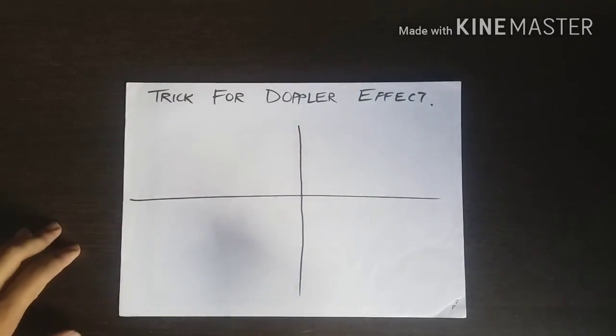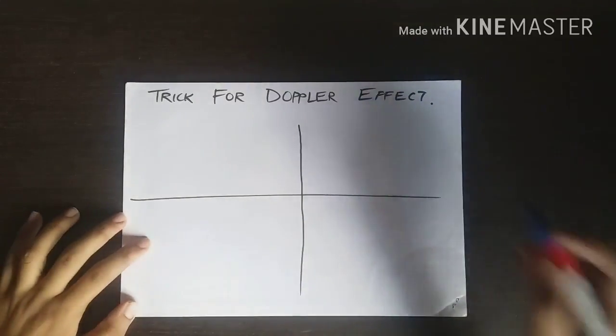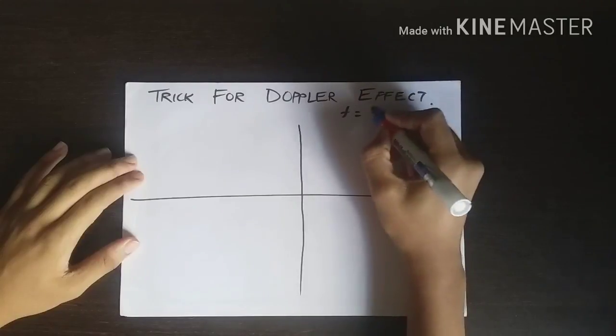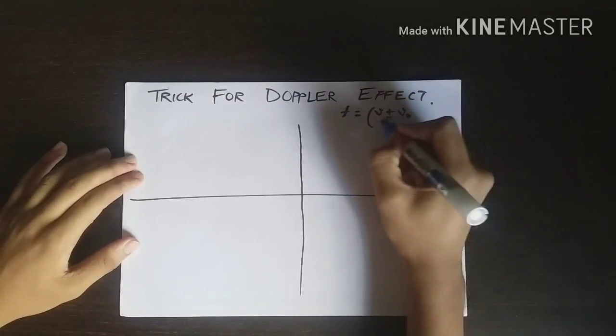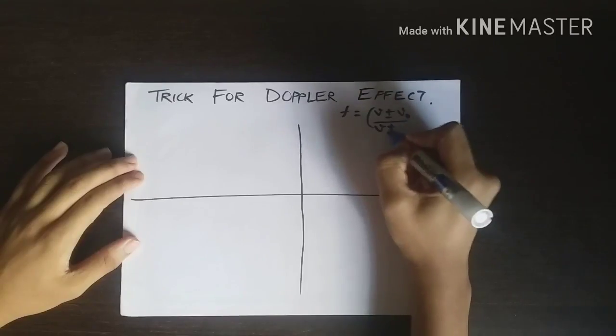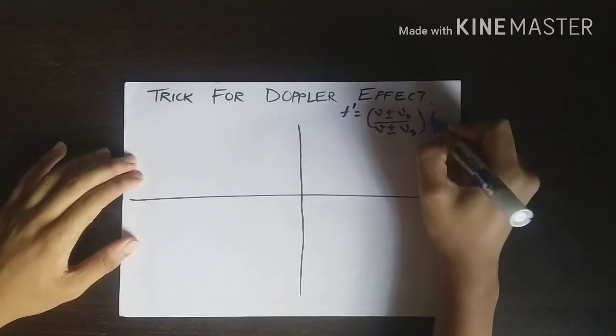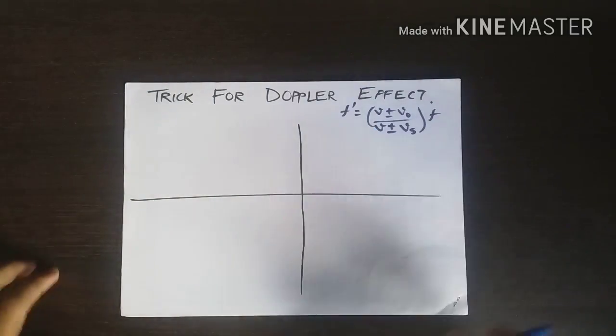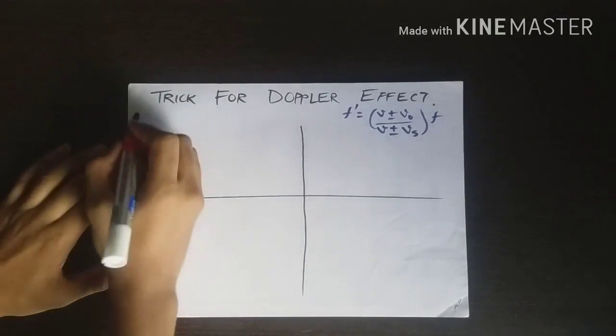I'm going to tell you the trick to remember all the formulas. The original formula from which all other formulas are derived is F' = (V ± V₀)/(V ± Vₛ) × F. This is the general formula from which all other formulas are derived.